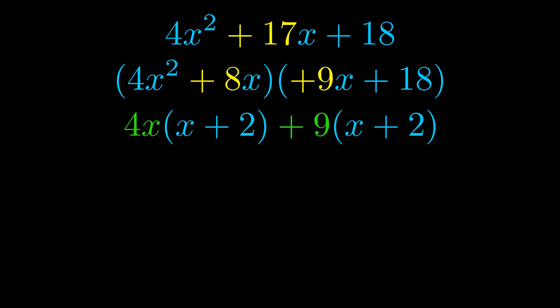Notice also how what remains inside of the parentheses is the same in both cases. The blue values are the same. Those blue values will become one of our factors and we will combine the two green values, the GCFs that we pulled out, to get the other one. And that is our fully factored equation.